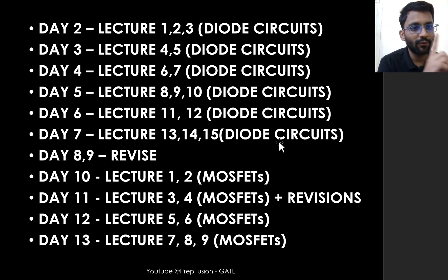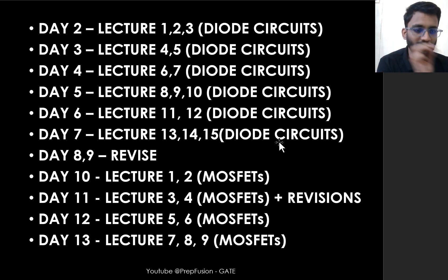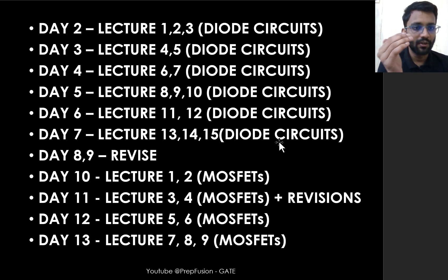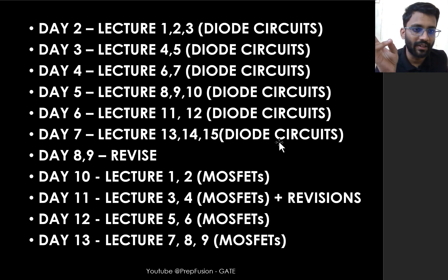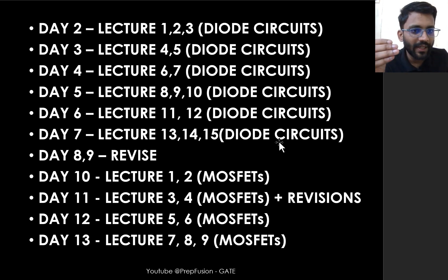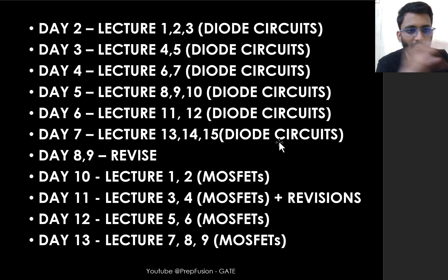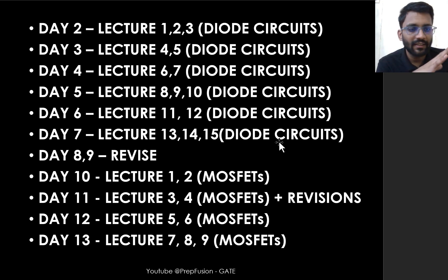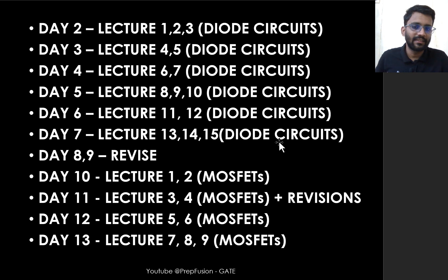Diode circuit is not that important for interviews — some questions can be asked, but they are very rare. For the written test it is more important. Also, to understand the next topics like MOSFET and BJTs — why we need three-terminal and four-terminal devices — diode circuit is important. Within the minimum time required, approximately seven to eight days, we are going to cover complete diode circuit. It is a moderate level topic and you will not find any difficulty.